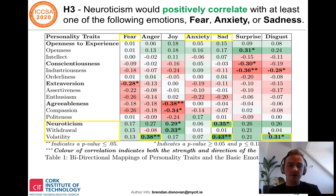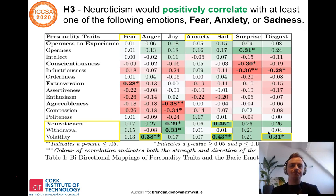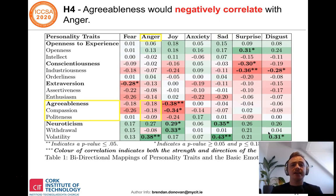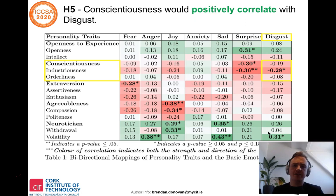Extraversion did not positively correlate with joy, which was counter to prior research. Neuroticism positively correlated with sadness on both neuroticism and volatility sub-traits. It did positively correlate with fear and anxiety, but not approaching statistical significance. It also had positive correlations with anger and disgust, which supports the idea that neuroticism is a negatively valenced trait. Agreeableness negatively correlated with anger, but this was not statistically significant. Conscientiousness was actually negatively correlated with disgust, contrary to prior theoretical postulations, particularly for the industriousness sub-trait.